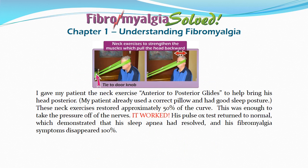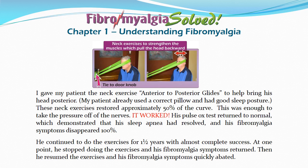I gave my patient neck exercises — anterior to posterior glides — to bring his head posterior. My patient already used the correct pillow and had good sleep posture. These neck exercises restored approximately 50% of his curve, which was enough to take the pressure off the nerves. It worked. His pulse ox test returned to normal, demonstrating that his sleep apnea had resolved, and his fibromyalgia symptoms disappeared 100%. He continued to do the exercises for one and a half years with almost complete success. At one point he stopped, his symptoms returned; then he resumed and they quickly abated.